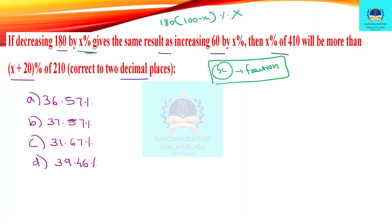If decreasing 180 by x percentage, I will take x as a fraction of 180. So the expression becomes 180 multiplied by (1 minus x). The first term gives us (1 minus x).